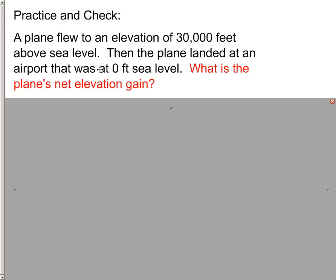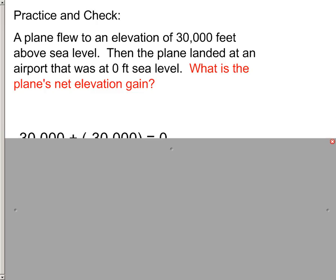Okay. So again the net gain, net elevation gain is after you've gone up, you know, how much elevation did you retain after you've given it away or in this case gone back down. So what was our highest point? It was 30,000 feet. We landed at an airport that was at 0 feet sea level which means that basically we dropped a negative 30,000 feet. That is how much we gave away so to speak. This is how much we gained. 30,000 plus negative 30,000 equals 0.